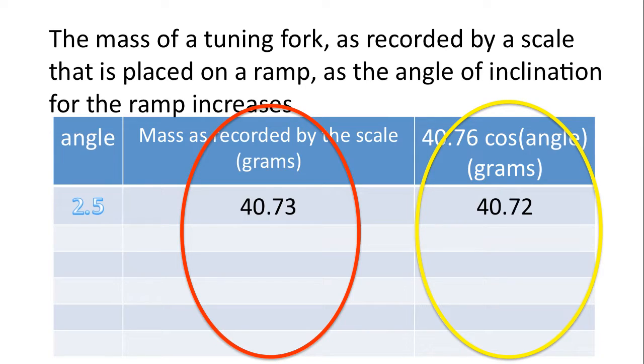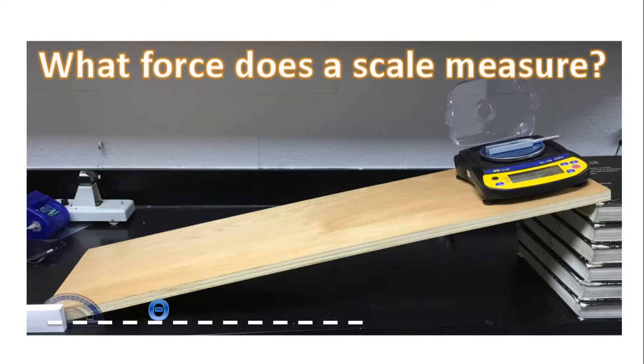And so, for example, we could substitute the angle 25 degrees into that formula and use it to predict the mass as recorded by the scale if we were to do that experiment. That's the power of physics. That we can write equations to predict outcomes. So now I'm going to show you how we get that formula.